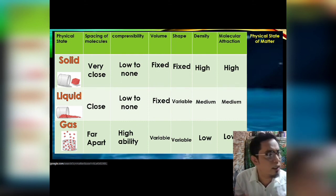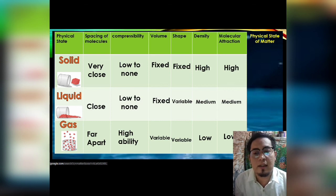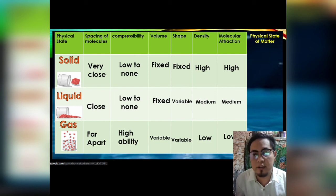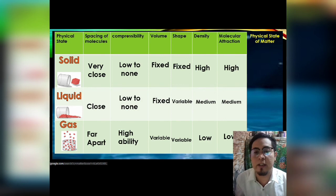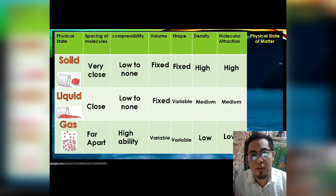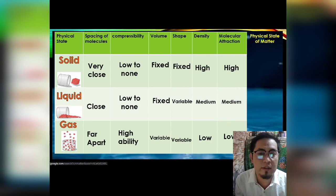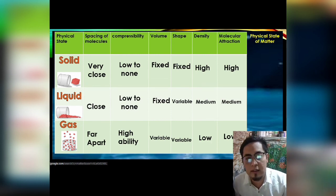Anything that can be considered as energy can be considered non-matter. We discussed energy in a previous topic during the first grading period. For example, sound energy — we know that sound occupies space because we can hear it, but we cannot measure the mass of sound. So sound has no mass and is therefore non-matter.